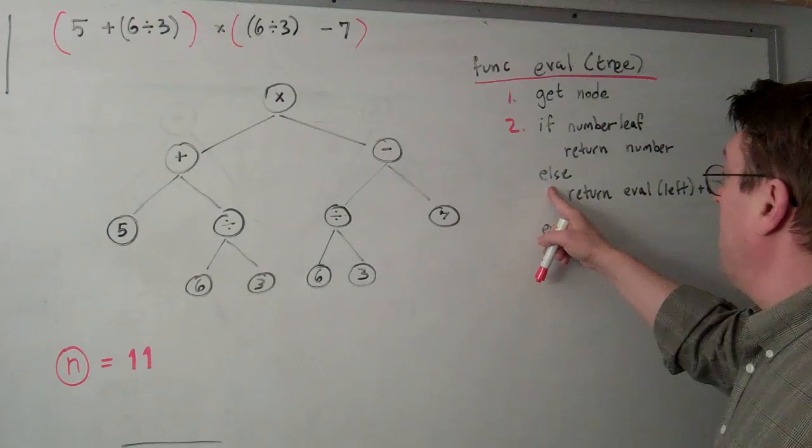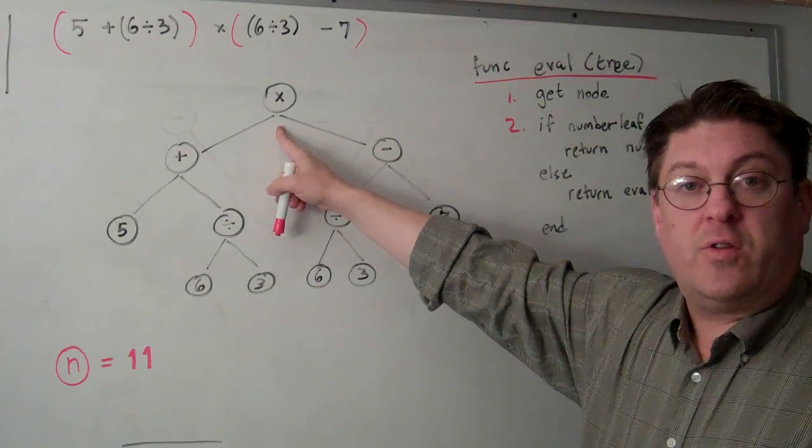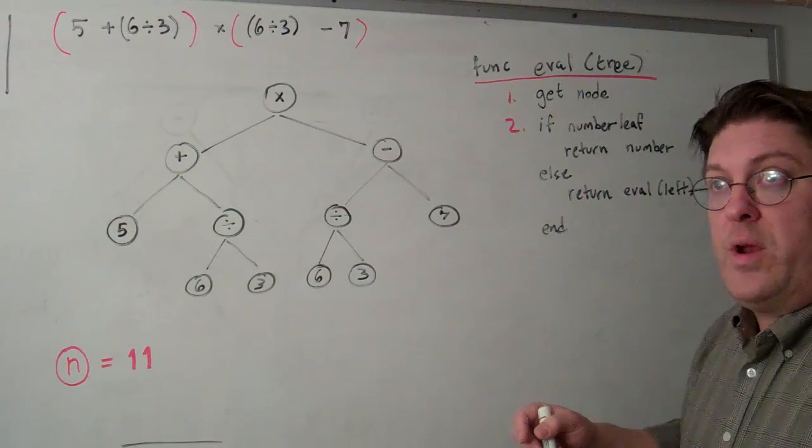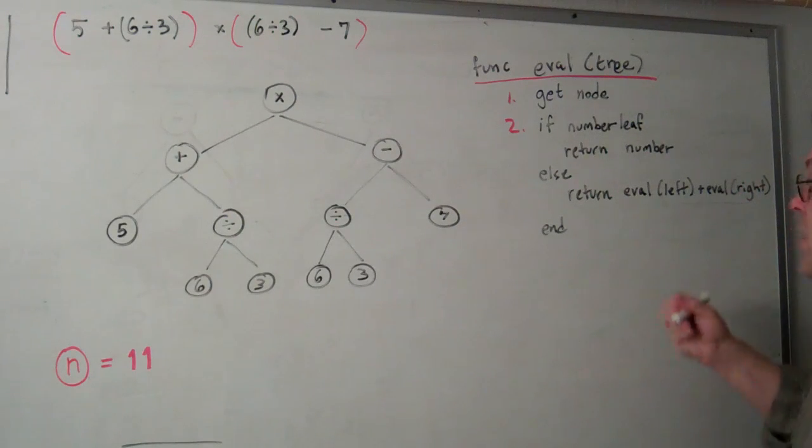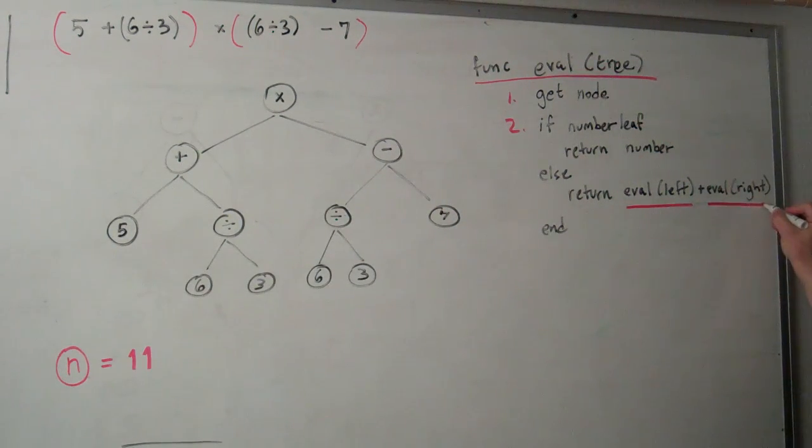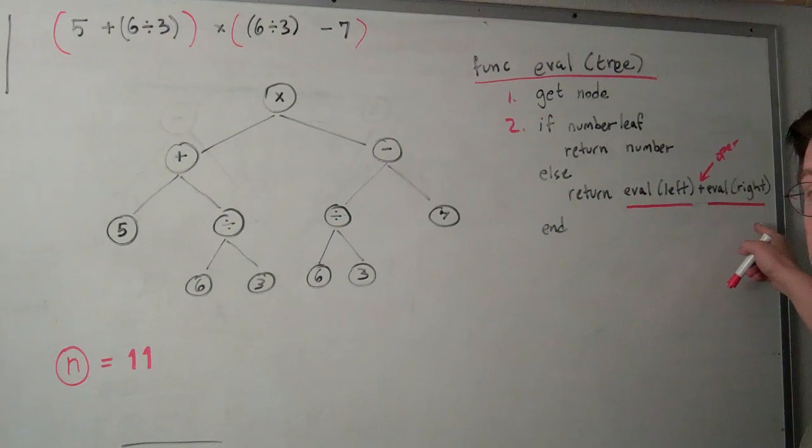Otherwise, if the node is an internal node with an arithmetical operator in it, then return what? Eval left plus eval right. Actually this should be whatever the operator was, not necessarily plus. So it would be eval left operation eval right.